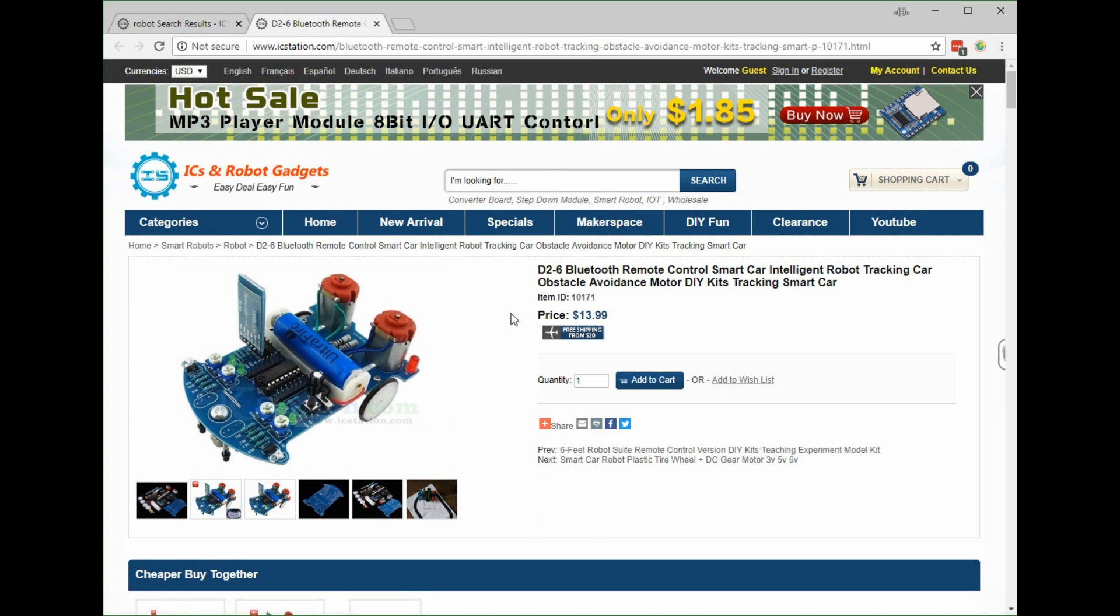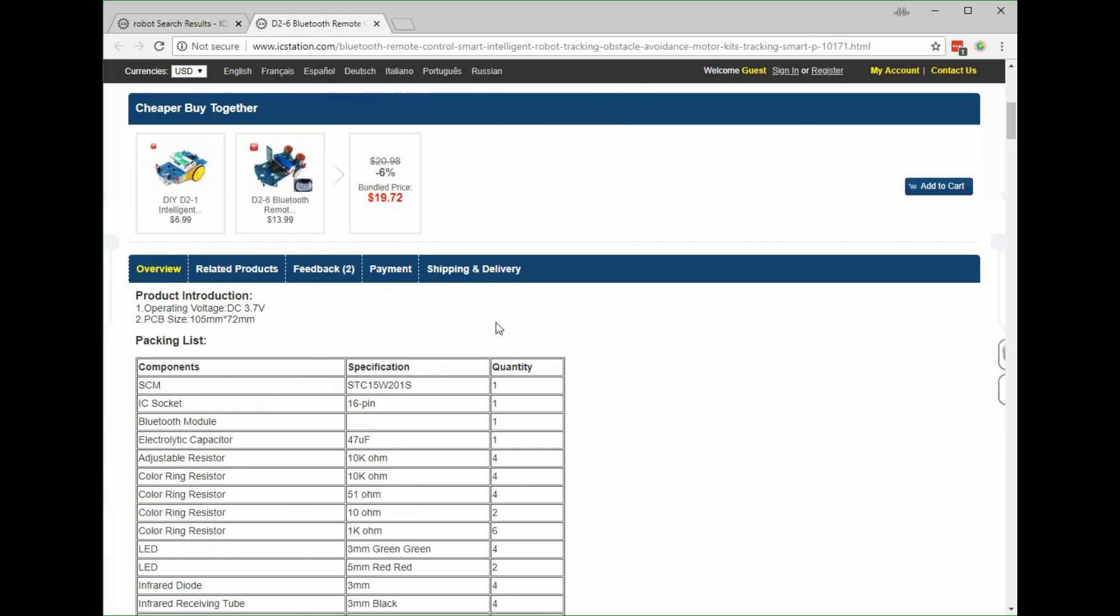So that's the Bluetooth remote control smart car intelligent robot obstacle avoidance and so on, $13.99 from icstation.com. Not bad, not a difficult kit to make. And remember, if you make it yourself, don't burn the wheel with the soldering iron because you might not have a spare.